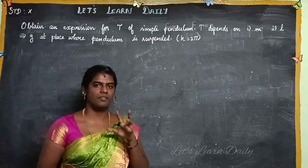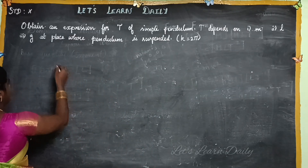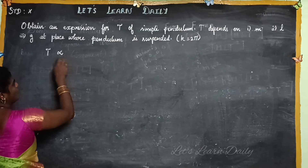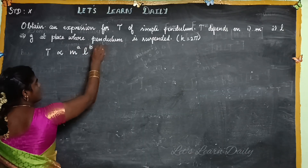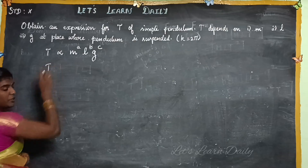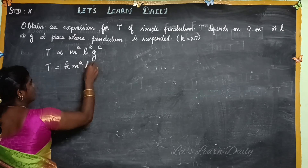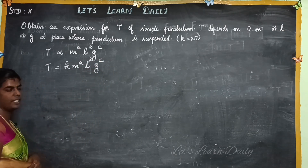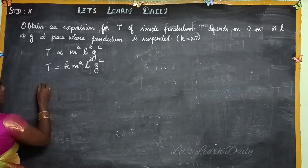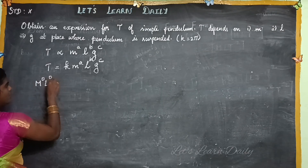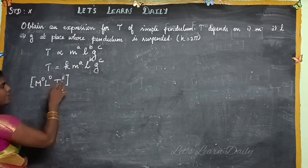First we write the dimensional formulas for time period, mass, length, and acceleration due to gravity. The general equation is: T is proportional to M^a · L^b · G^c, where a, b, and c are the powers of the dimensions. We use a constant k, so T = k · M^a · L^b · G^c. The left-hand side has dimension M⁰ L⁰ T¹.